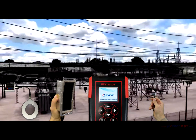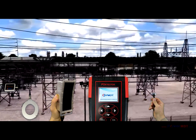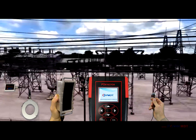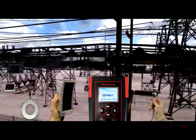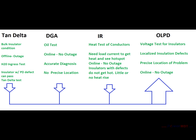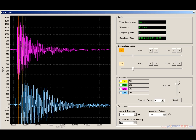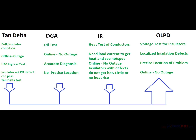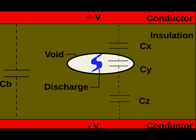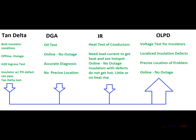Online PD testing can be implemented hand-in-hand with infrared thermography. Complementary to IR, PD issues are not related to load current and do not necessarily produce heat. These discharges produce very short radiofrequency pulses with a duration in the nanosecond range. PD also produces ultrasonic emissions. Because these discharges are very brief and only occur in a very small portion of the insulator, the insulator's bulk properties are relatively unaffected — the insulator may even pass a tan delta or mega-ohm test.